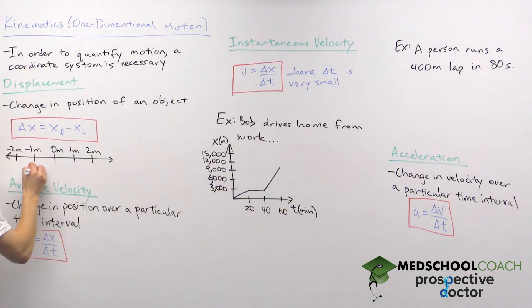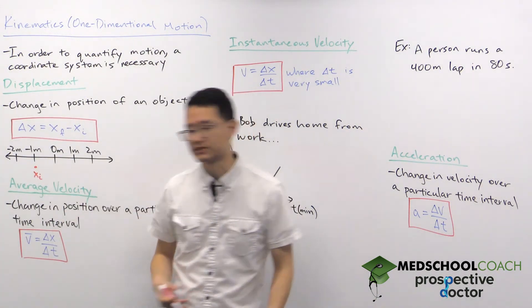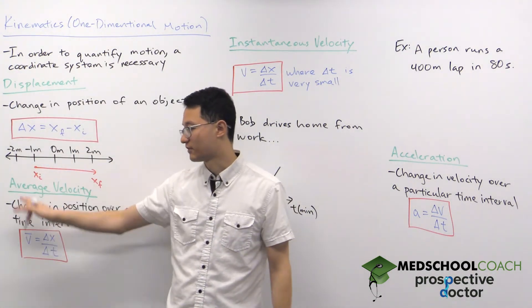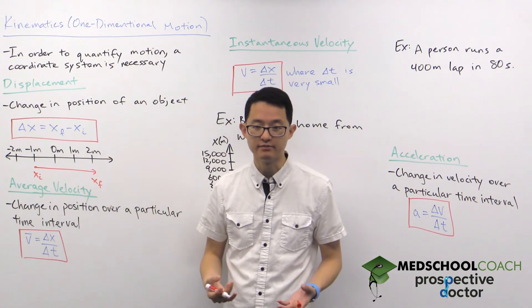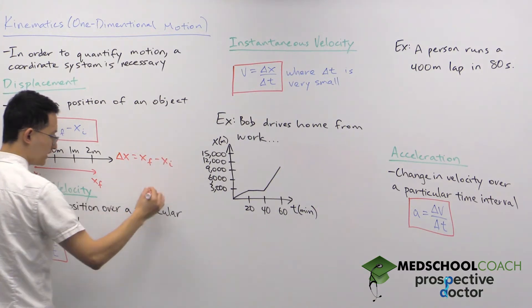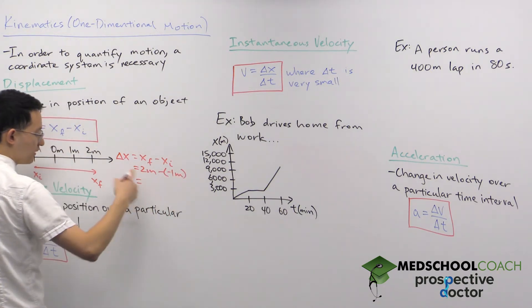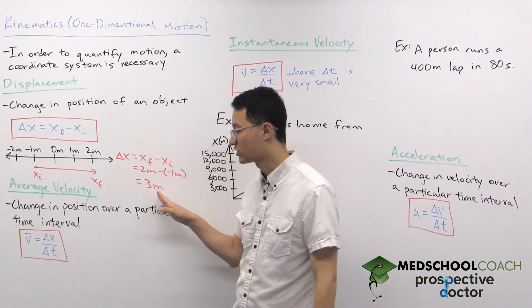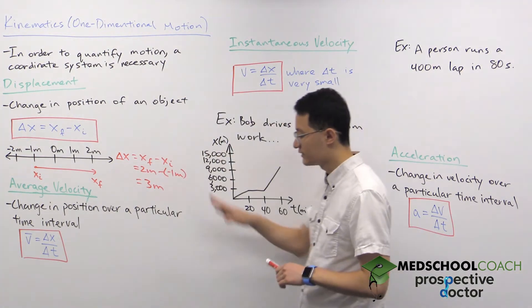In this example, our object has an initial position of negative one meter and a final position of two meters, so the object moved from the initial position to the final position. Using the equation ΔX = Xf − Xi, our final position is two meters and our initial position is negative one meter, giving us positive three meters. This means our object moved a distance of three meters in the positive direction.